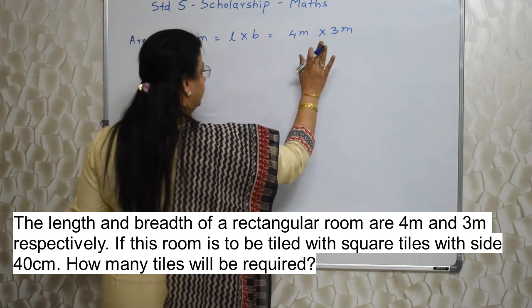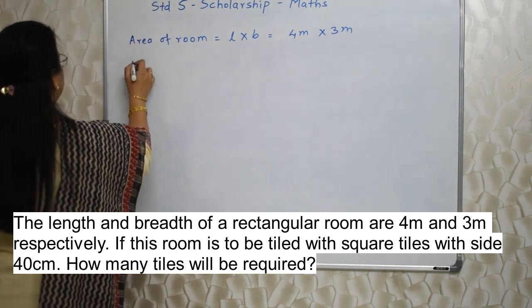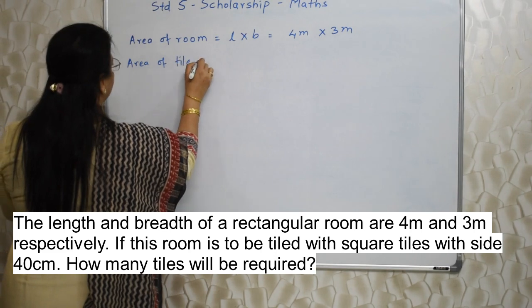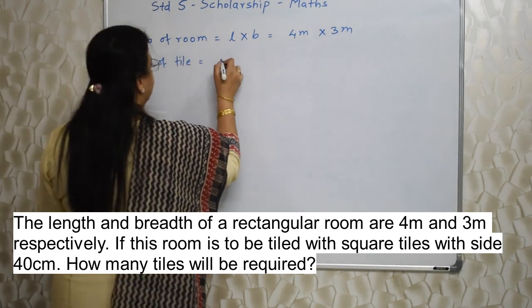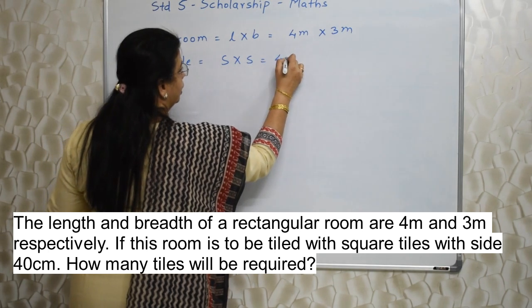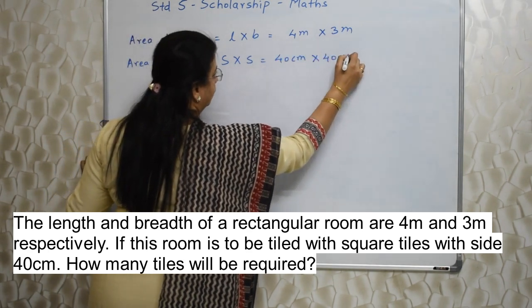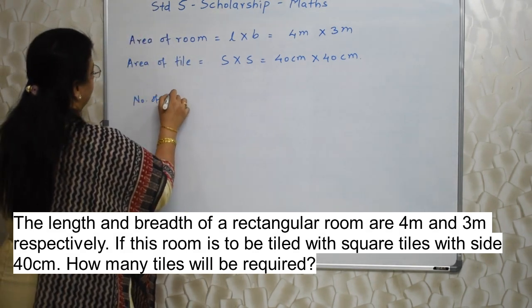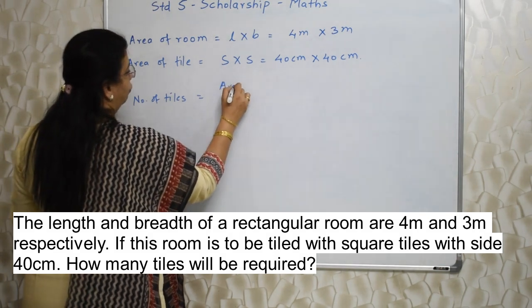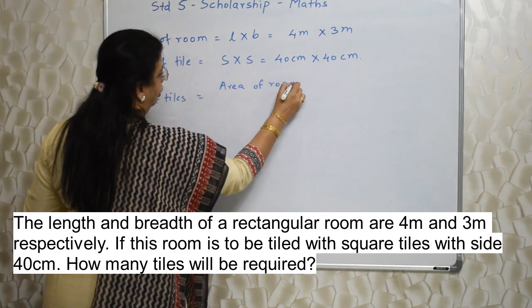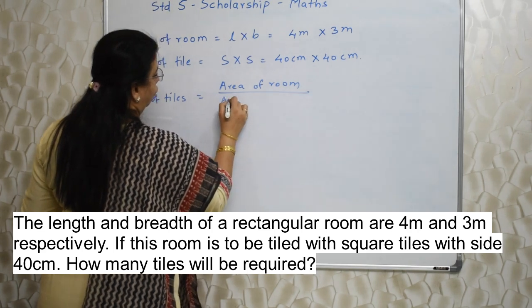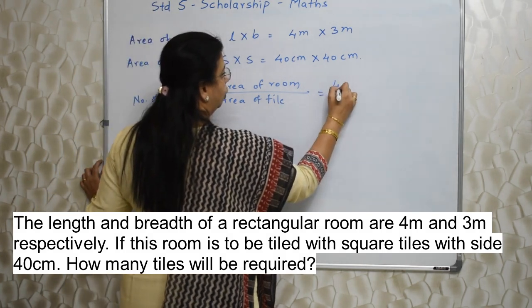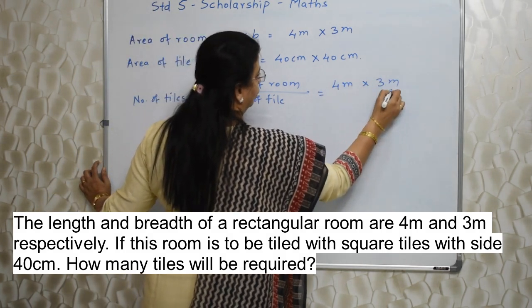I am leaving the area of the room as 4 meter by 3 meter for now. The area of the square tile is side into side, that is 40 cm by 40 cm. Now to find out the number of tiles, the formula is area of room upon area of tile. You need to be very careful with the units.